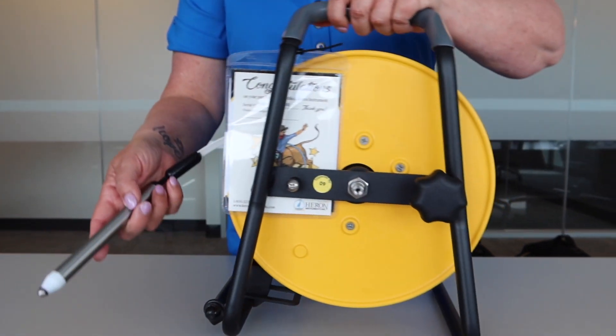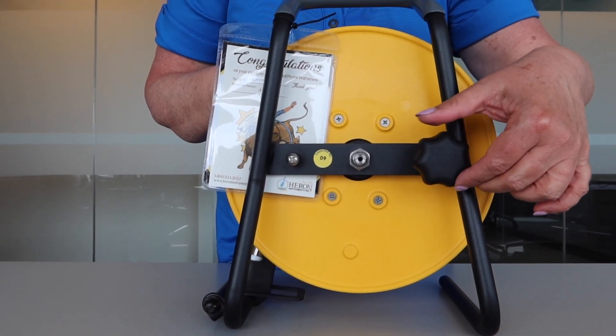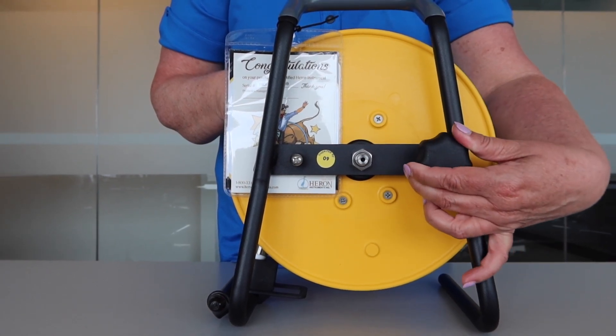On the back of the frame you will find the brake knob. Loosen the brake when you are lowering the tape down the well. At any time you need to stop the tape simply tighten the brake.